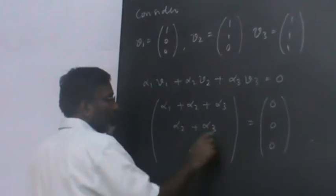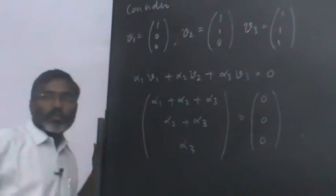So, it is straightforward. Alpha 3 is zero. Alpha 2 is zero. Alpha 1 is zero. So, they are linearly independent.